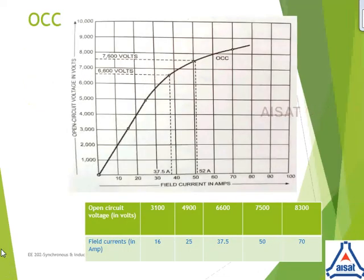The given test data are open circuit voltage in volts, then field current in amperes. Given for 3100 volt correspondingly 16 amps, then for 4900, it is 25 amps. Likewise, till 8300, we got 70 amps. How is this being plotted as open circuit voltage along y-axis on a suitable scale. Here, we have taken 1000 volt per unit. And also, along the x-axis, I have taken 10 ampere per unit. The very first point is, with respect to 3100 volt, it is 16 ampere. 3100 comes somewhere over here. Likewise, you can get the next test data.